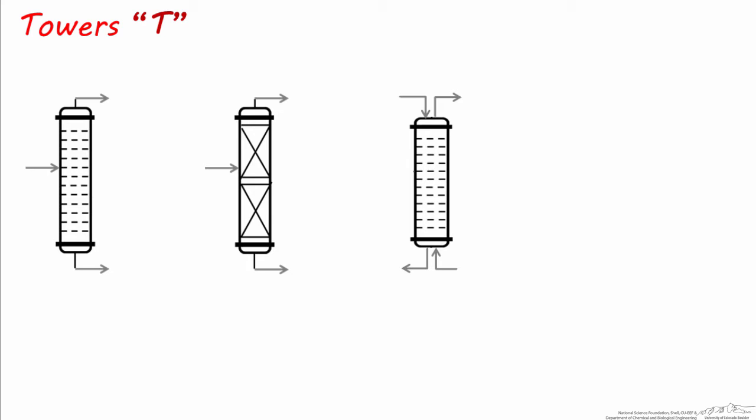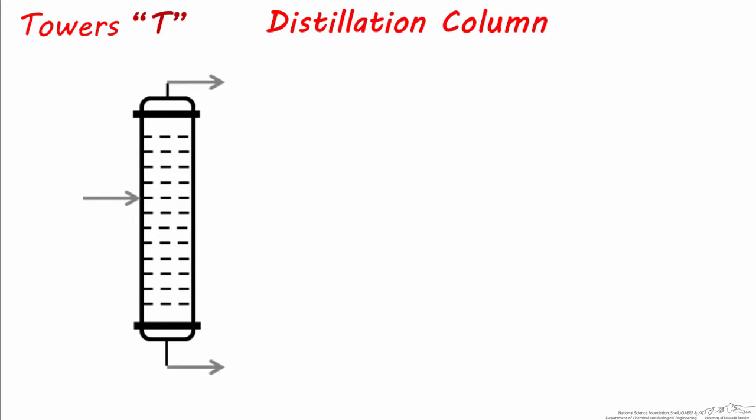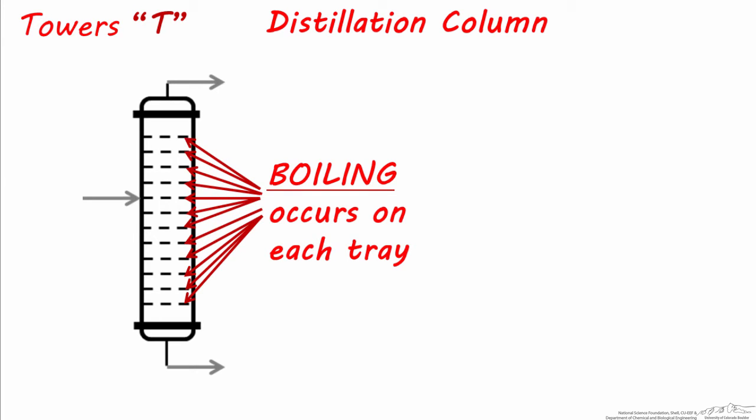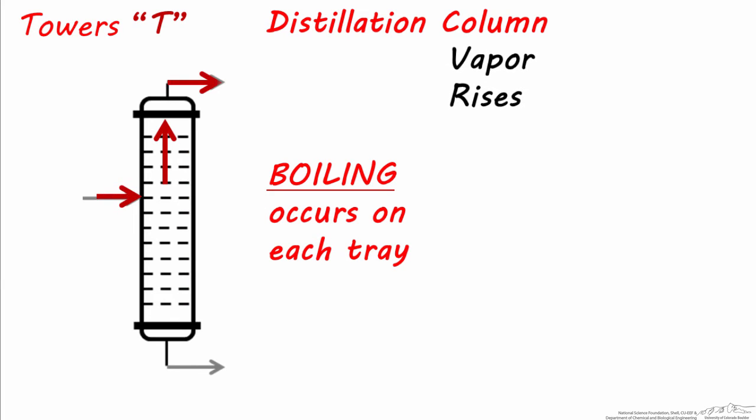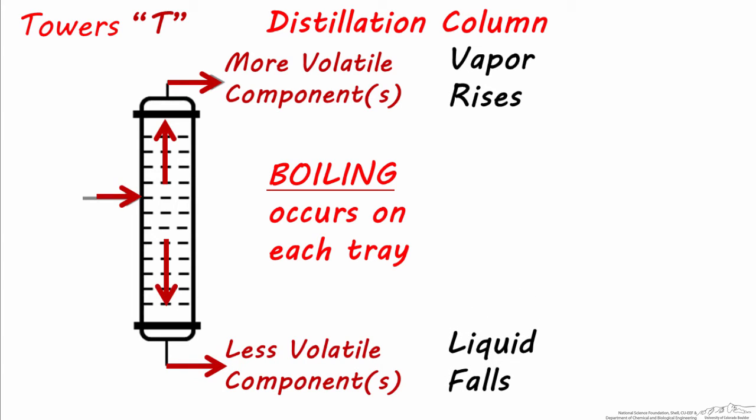Let's look at some of these separation equipment symbols more closely and briefly look at how these units function. These are symbols for tray and packed distillation columns. Distillation uses boiling to separate homogeneous mixtures into two or more streams. This boiling of the stream occurs on every tray of the distillation column. The more volatile components vaporize and rise to the top of the column, while the heavier, higher boiling point components are separated from the bottoms.